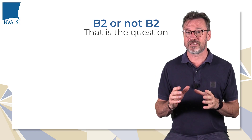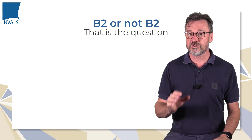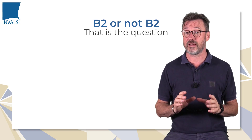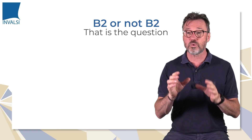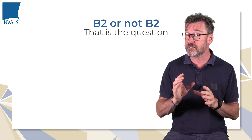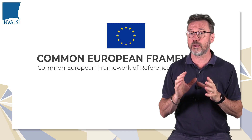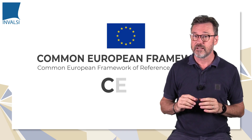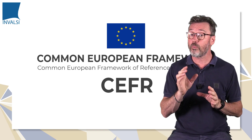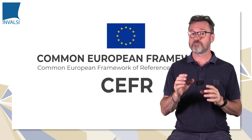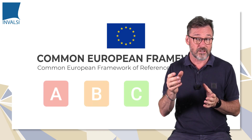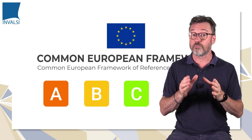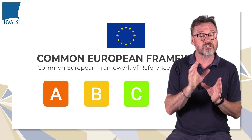So what makes a text a B2 text? In order to identify the features of text representative of each level, it's worth referring back to the CEFR descriptors to highlight key words which will help us select suitable texts consistent with the target level. The Common European Framework of Reference for Languages, or CEFR, is an international standard to describe competence in a foreign language. It was developed by the Council of Europe and is structured on a progressive scale of A, B and C, further developed into sub-stages from level A1 to C2.